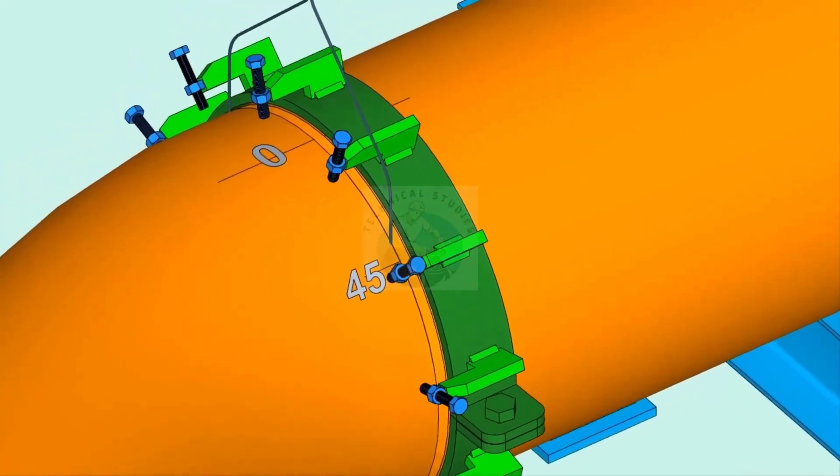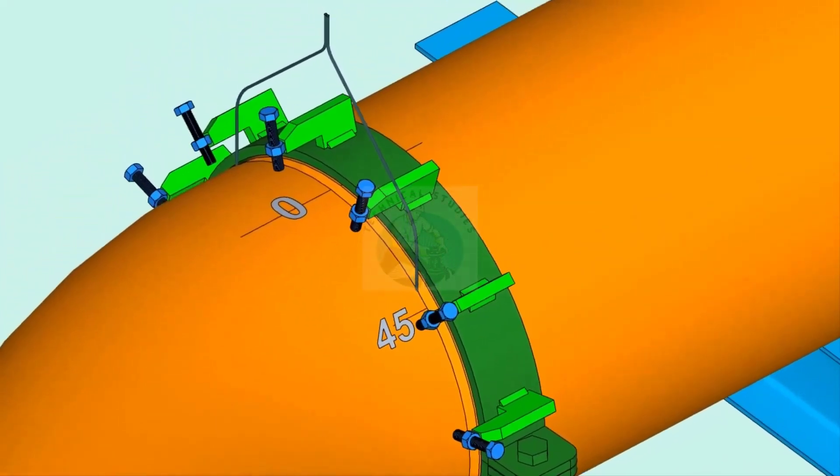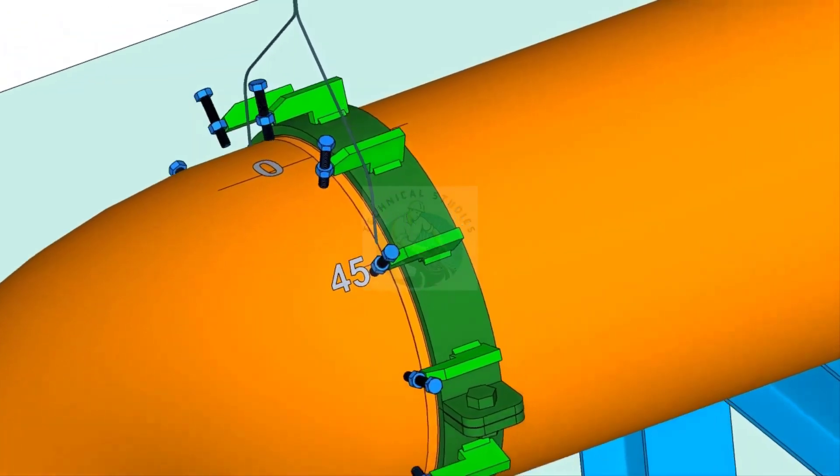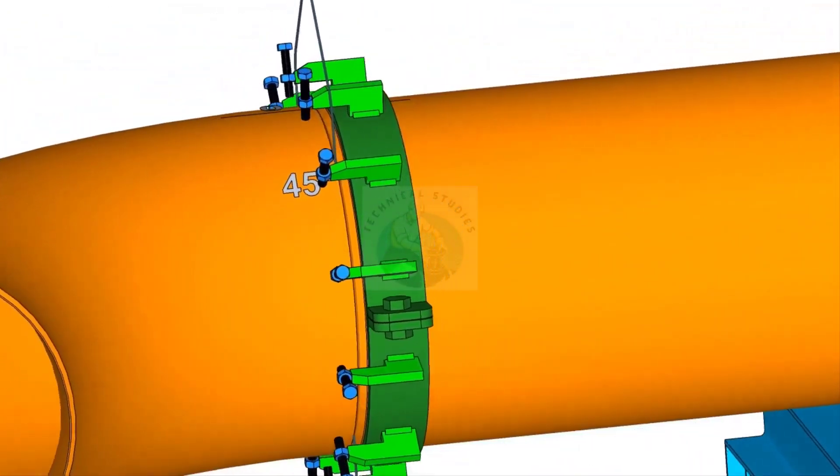Put the gap rod in the joint. Now slowly rotate the elbow until the 45-degree mark comes opposite to the 0 mark on the pipe.